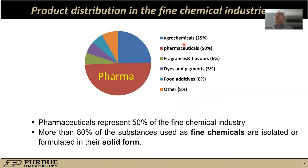In addition to this, if you look at the distribution of pharmaceuticals in the overall chemical industries, we can see that it actually represents approximately 50% of the fine chemical industry — globally a very significant market. Looking in more detail at what type of products are manufactured within this sector, we can see that 80% of the substances generally developed as fine chemicals are isolated in solid form during the manufacturing process. Therefore, crystallization becomes a key unit operation which has a strong impact on the overall efficiency of the manufacturing process.